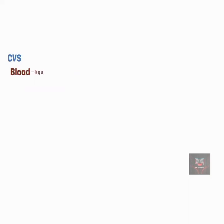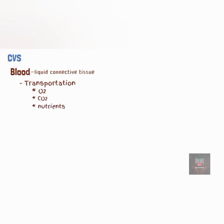The blood is a liquid connective tissue that consists of cells surrounded by plasma. The blood transports oxygen from the lungs to the cells of the body and carbon dioxide from the body cells to the lungs for exhalation. It carries nutrients from the gastrointestinal tract to the body cells and hormones from the endocrine glands to other body cells. It also transports waste products of various organs for elimination from the body.